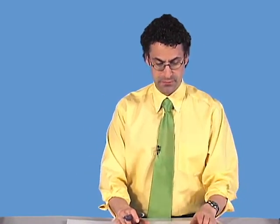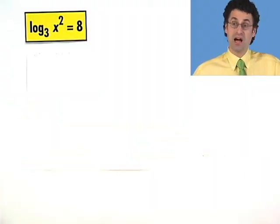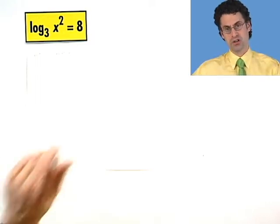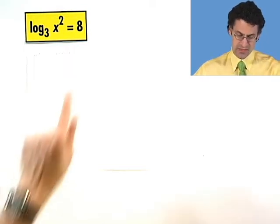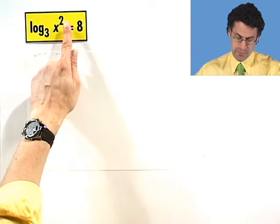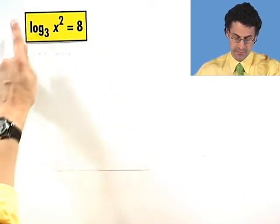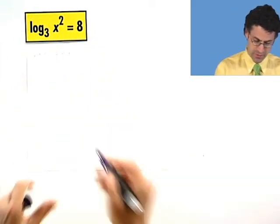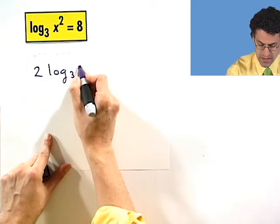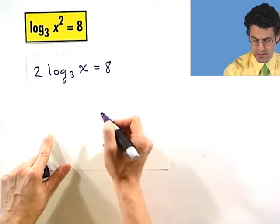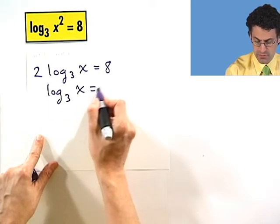How about this one? Log base 3 of x squared equals 8. Now, there are lots of ways of doing this. I want to show you what I think is the easiest way. The easiest way is to realize that that 2 exponent can be brought out in front of the log by the famous property of exponents inside of logarithms. If I were to do that, then I would see 2 log base 3 of x equals 8. If I divide both sides by 2, I see log base 3 of x equals 4.